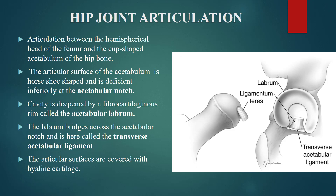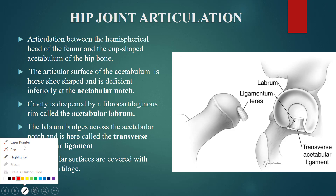The hip joint is articulated between the hemispherical head of the femur and the cup-shaped acetabulum of the hip bone. Hemi means half and spherical is a sphere, so this is a half sphere — the hemispherical head of the femur articulating with the cup-shaped acetabulum. The hip joint is the articulation between these two structures.